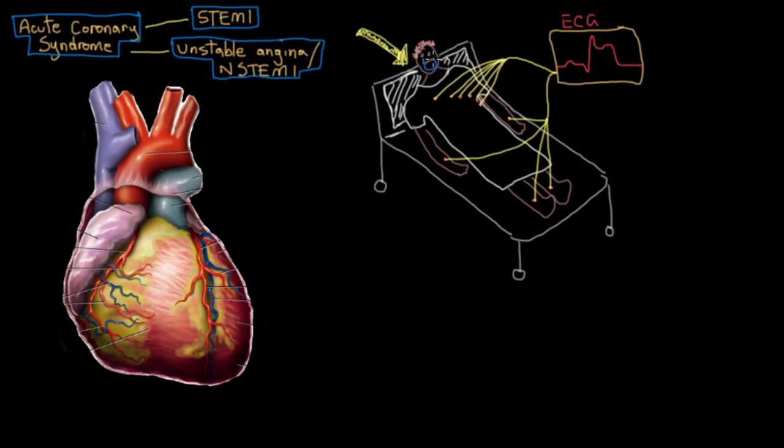They might be given supplemental oxygen if it turned out that they weren't carrying enough oxygen in their bloodstream. And they might be given morphine, and that's to reduce the amount of chest pain that they're feeling, and to also reduce the amount of anxiety that they might be feeling. And hopefully by doing that, by reducing their anxiety, they'd reduce their heart rate, and even further reduce the amount of oxygen that their heart needed.